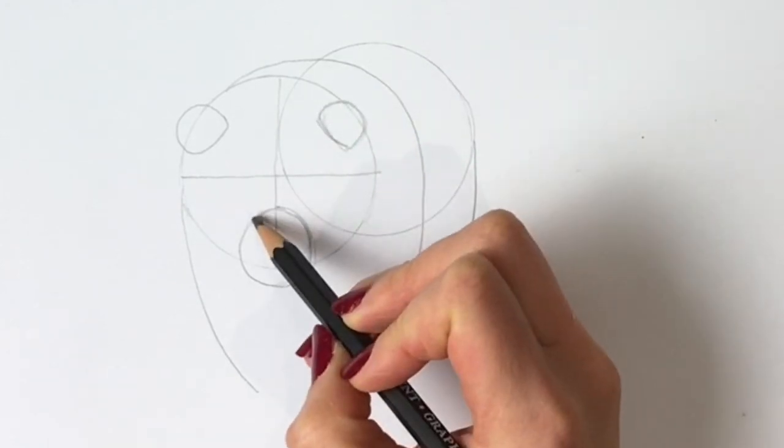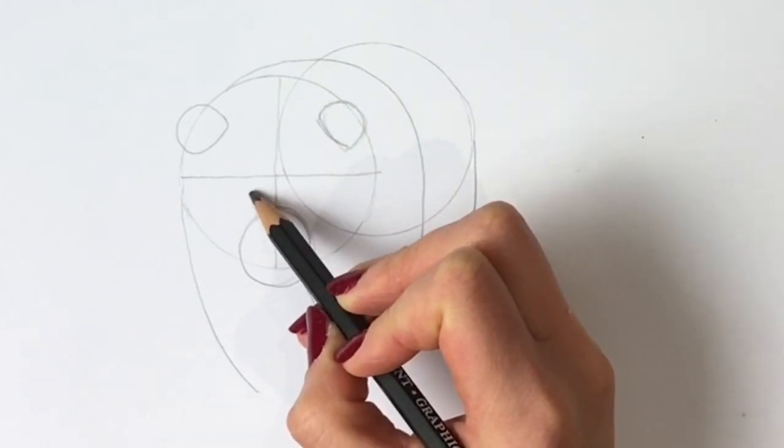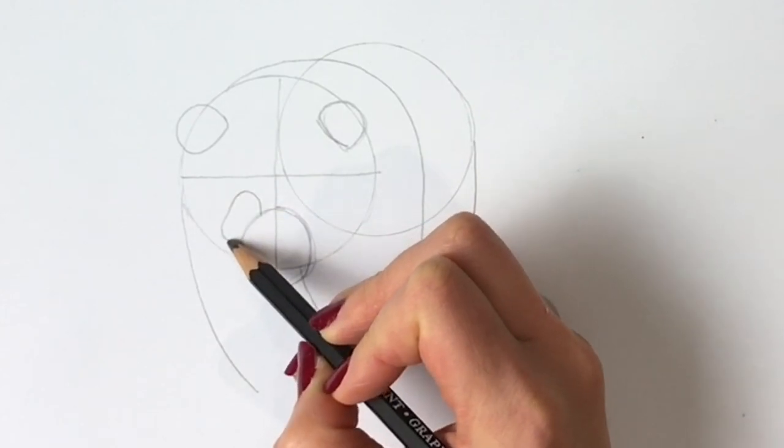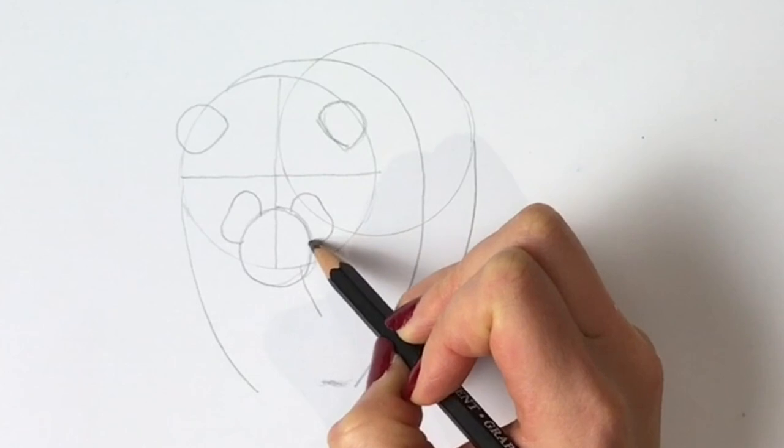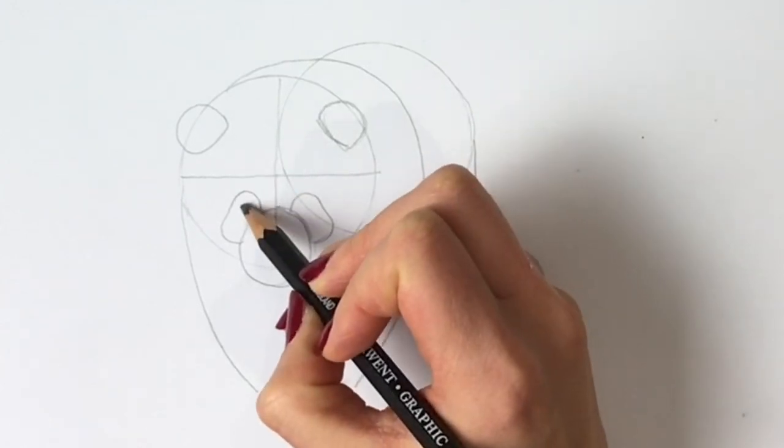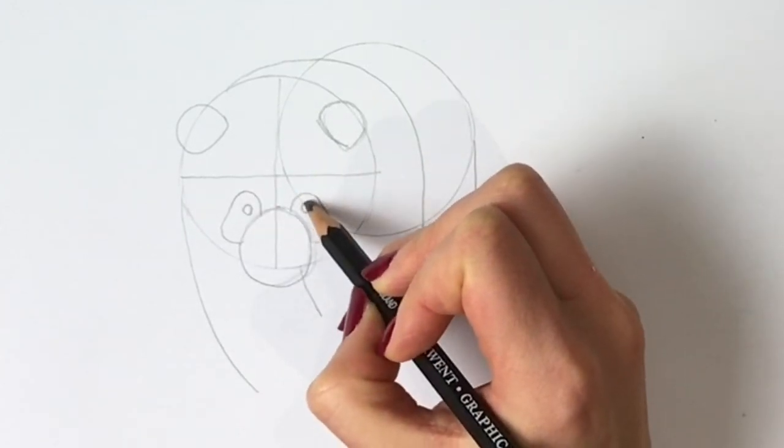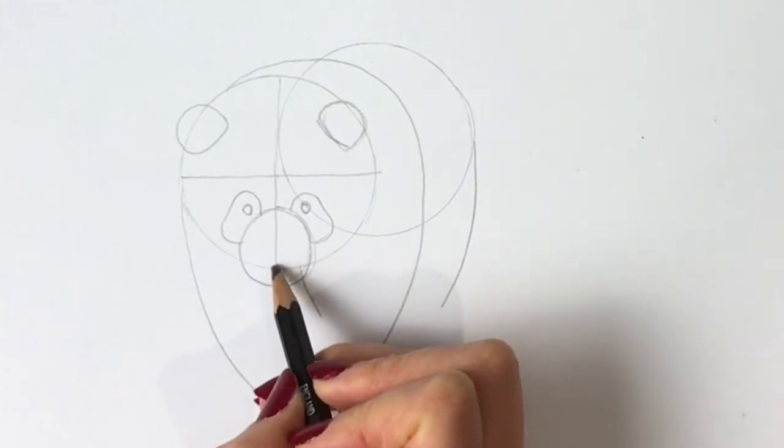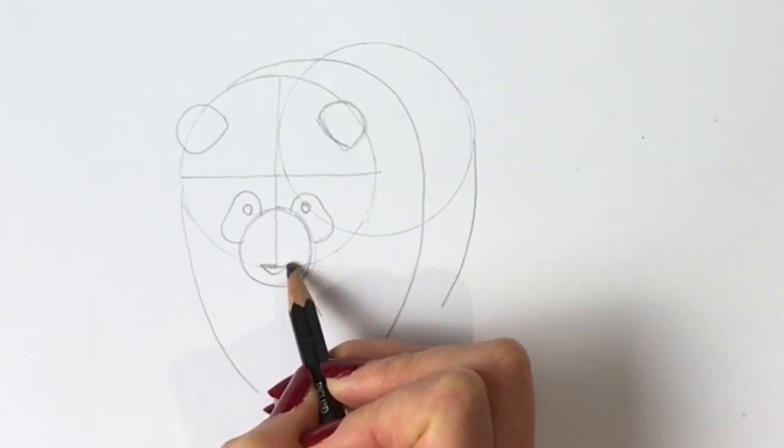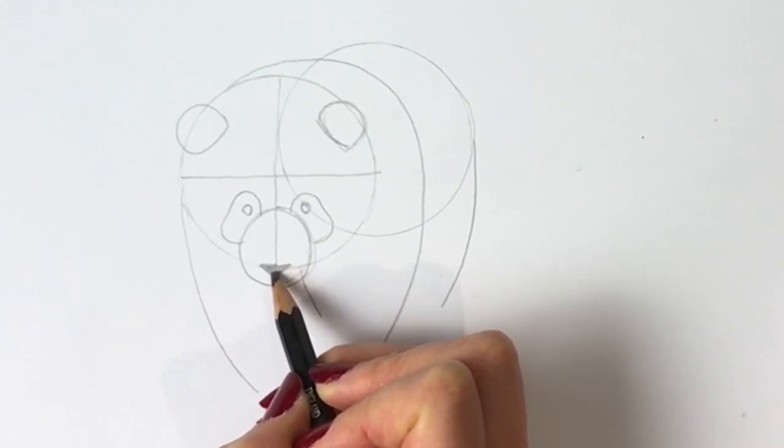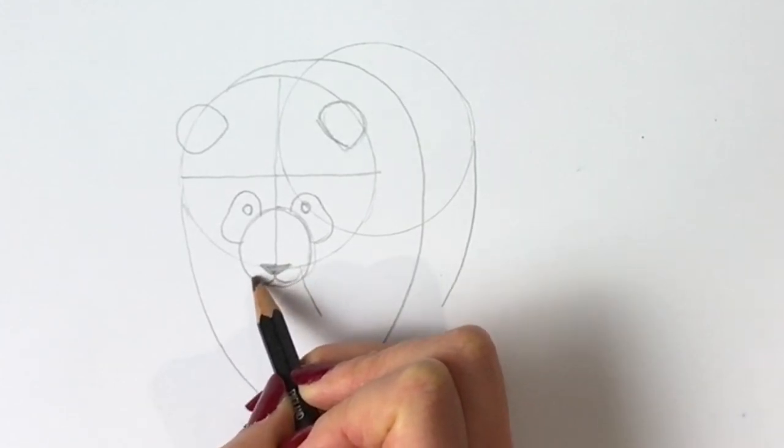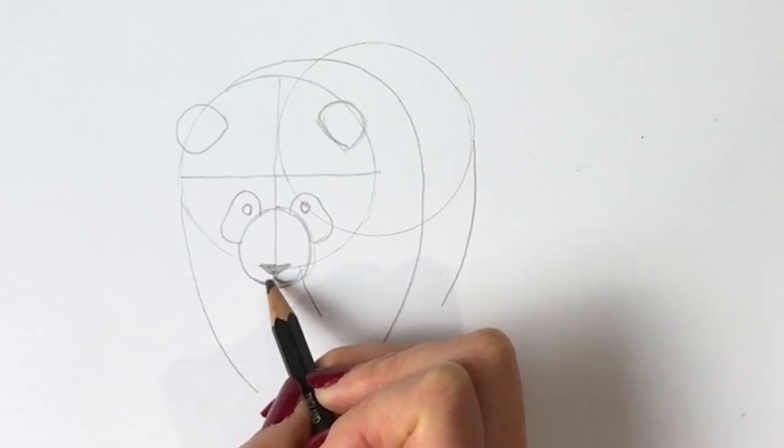Now for the eye markings just draw a shape like that on one side and another shape on the other side, and two little eyes on there and one there. And for the nose just here just do a kind of upside down triangle shape. And then the mouth like that.